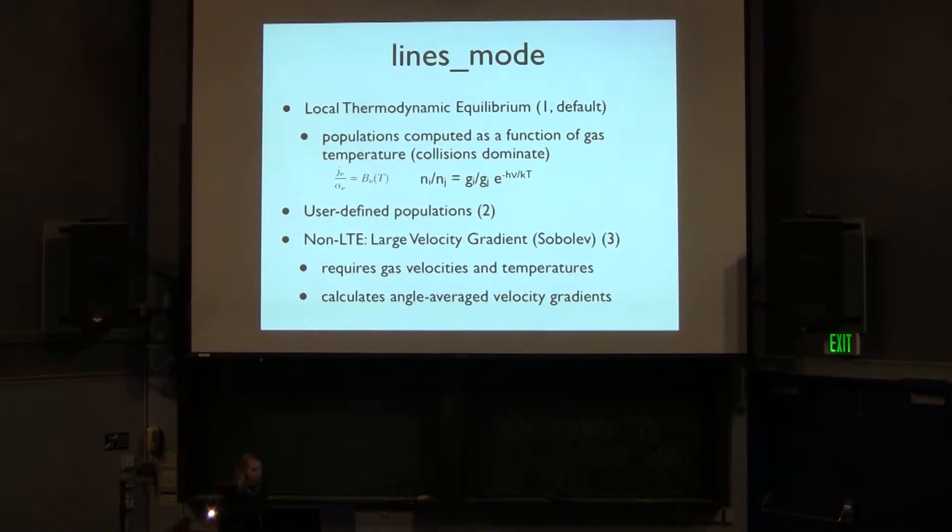So RADMC has a number of different line modes to choose from. The simplest is the LTE, which is the default method. As we discussed last week, in LTE, the populations are computed purely as a function of gas temperature. So here, the ratio of the emissivity to the absorption, that is the source function, is simply the Planck function. So it depends only on the gas temperature. The next one is a user-defined population. So if you have some information about the distribution of the excitation of whatever you're modeling, you can put that in by hand.